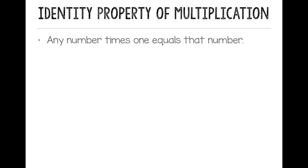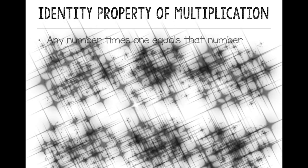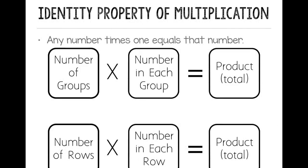Let's start by looking at the identity property of multiplication. Remember this says any number times 1 equals that number. And remember when we're writing a multiplication problem, we start with the number of groups multiplied by the number in each group to get our product. Or if we're making an array, the number of rows times the number in each row to get our product.